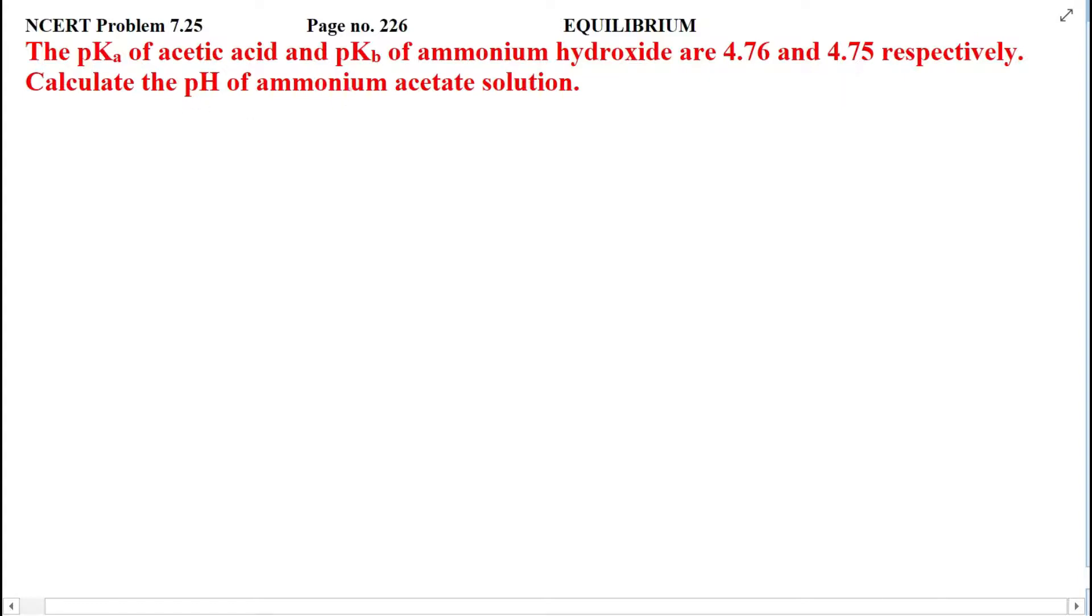And we have told you that ammonium acetate solution, that is the pH of ammonium hydroxide and acetic acid given. Acetic acid means CH3COOH, ammonium hydroxide NH4OH given. Now we have told you that ammonium acetate is formed.